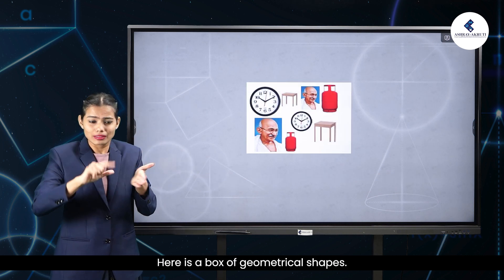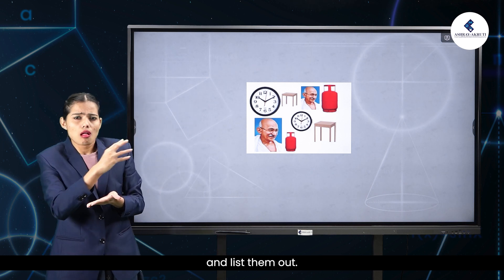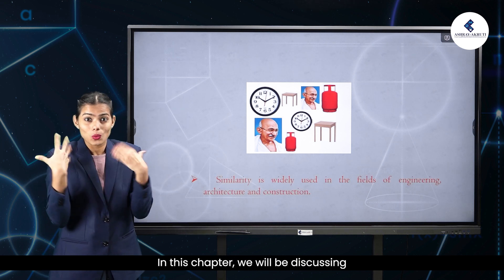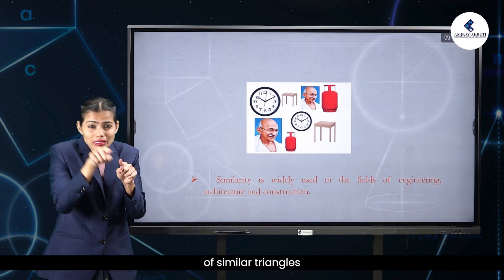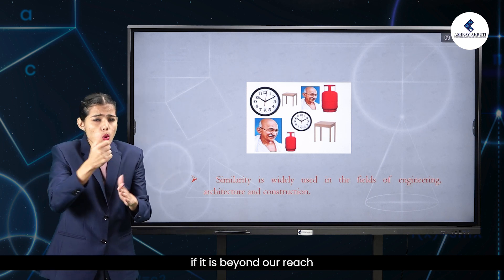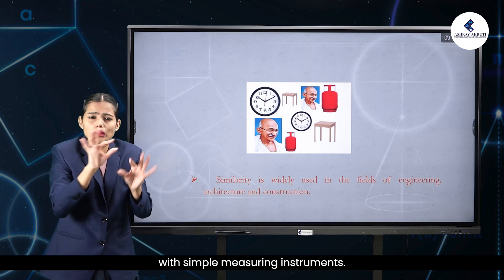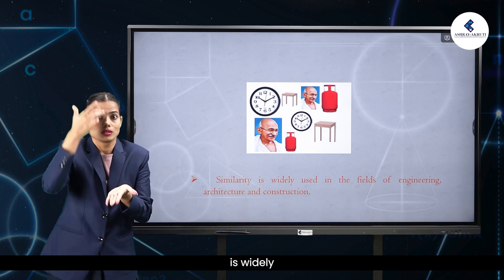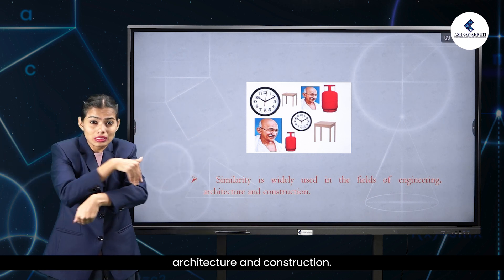Here is a box of geometrical shapes — collect similar objects and list them out. In this chapter, we will be discussing specifically the use of similar triangles, which is of utmost importance where it is beyond our reach to physically measure distance and height with simple measuring instruments. The concept of similarity is widely used in the fields of engineering, architecture and construction.